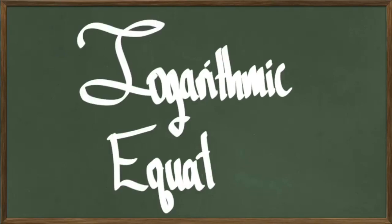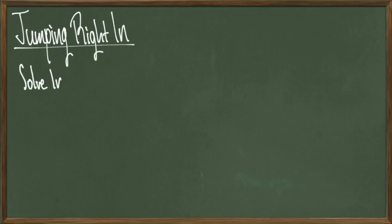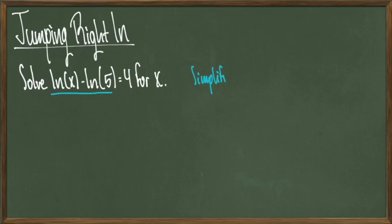Hey everyone, today we're going to be talking about logarithmic equations. There's really not too much setup here that's needed so we can just jump right in. We're going to solve ln(x) - ln(5) = 4 for x.